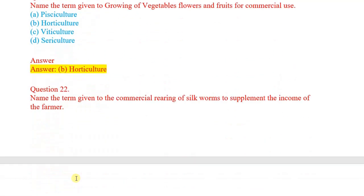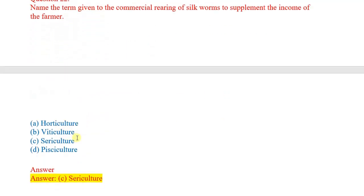Question number 22: Name the term given to the commercial rearing of silkworms to supplement the income of the farmers. Options: horticulture, viticulture, sericulture, pisciculture. Correct answer: sericulture.